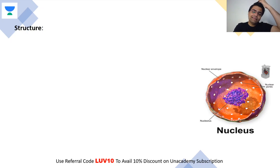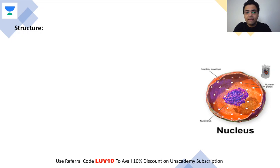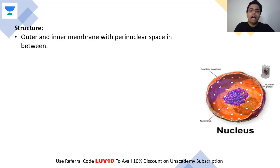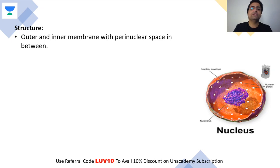Now let's talk about the structure of the nucleus. The nucleus has two membranes: an outer membrane and an inner membrane. The center of this structure is the nucleus itself.